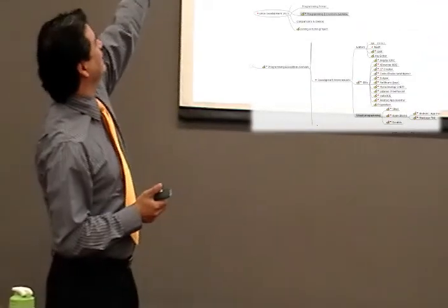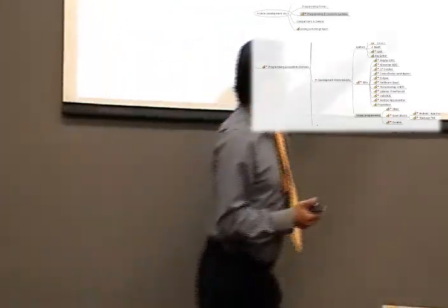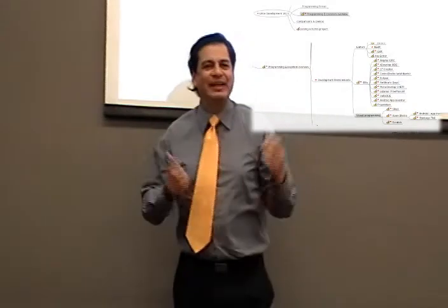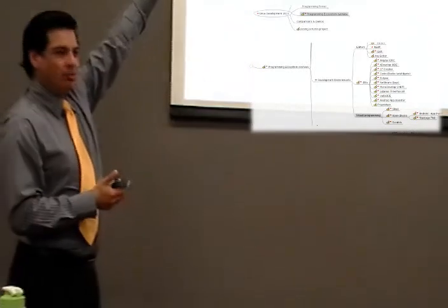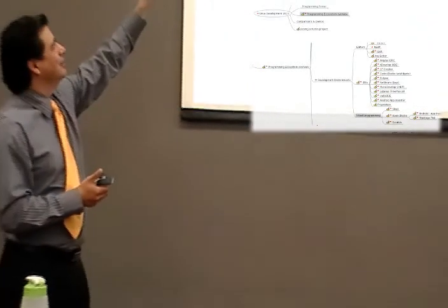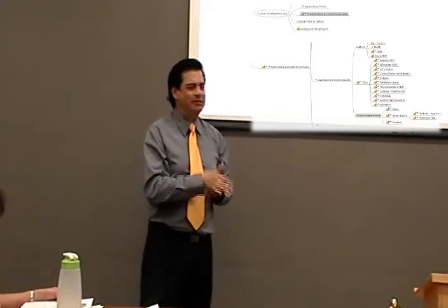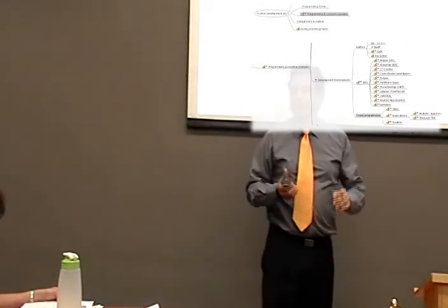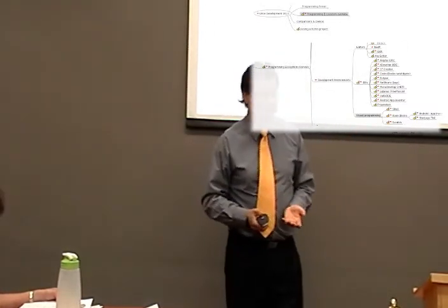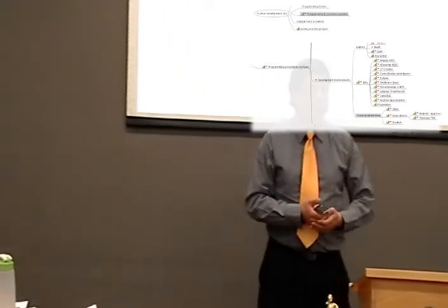Here we have the same mind map — one collapsed. This presentation, for example, has 179 nodes, and 81 links to external resources. When I was thinking about this presentation, I could focus on single areas, and if an idea came that fit somewhere else, I could just plug it in somewhere else. At the end, I got a perfectly organized presentation that was very easy to follow.